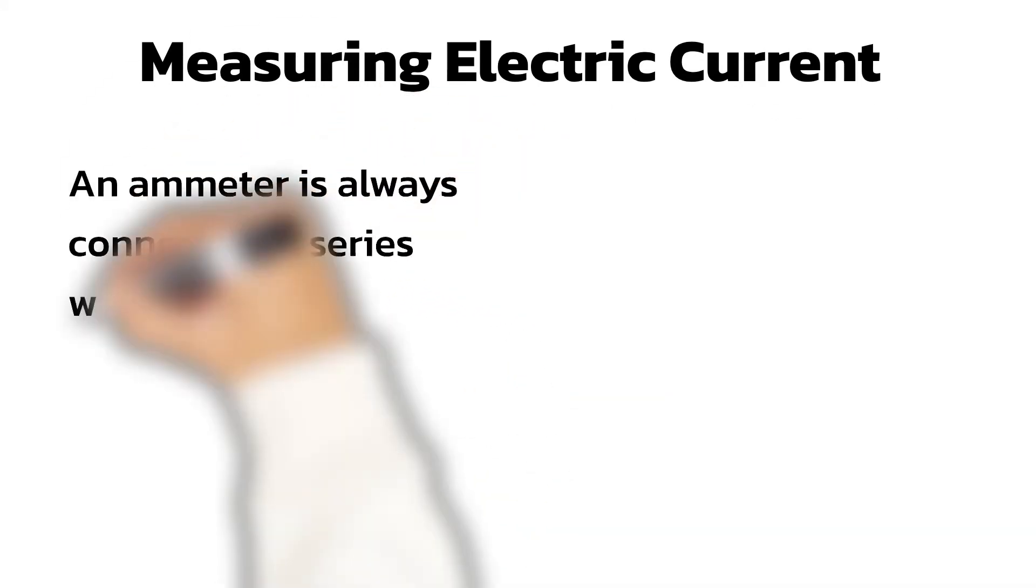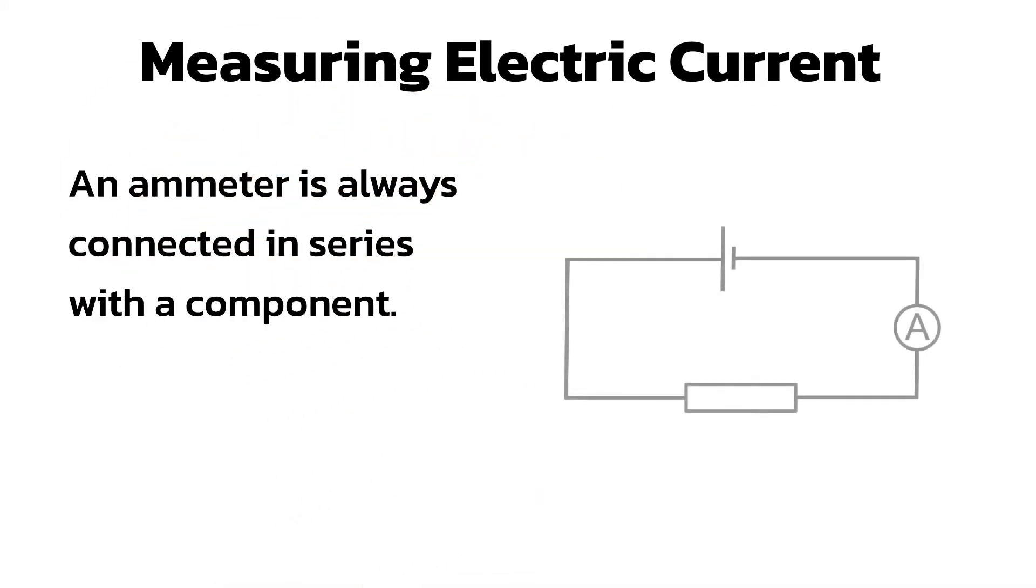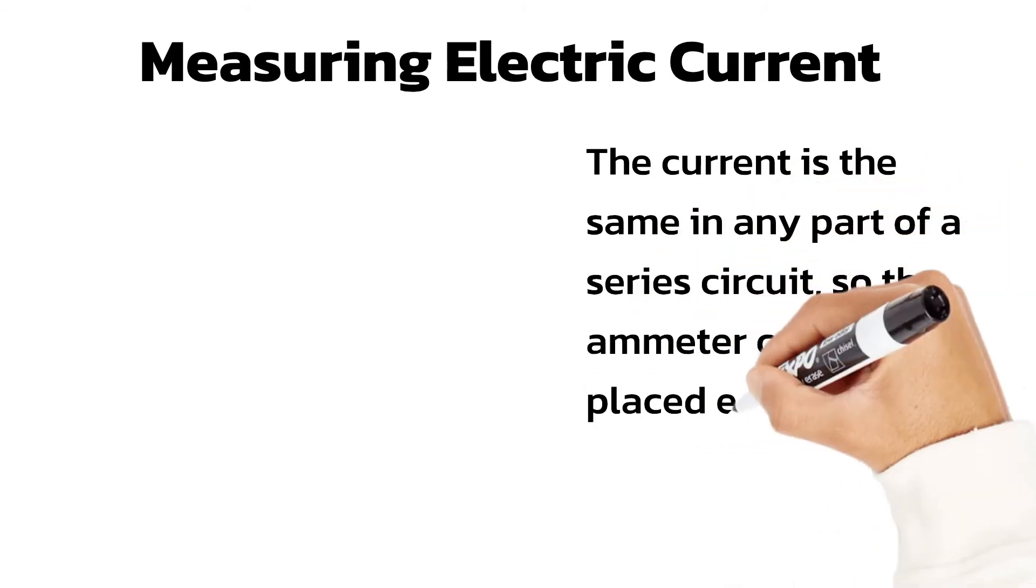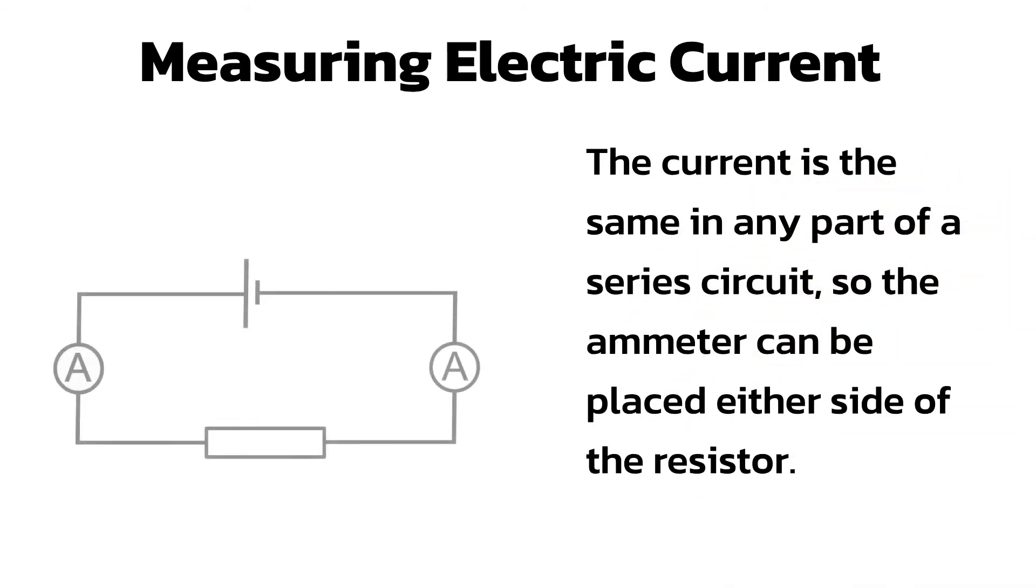Ammeters are always connected in the same loop as the component the current is flowing through. This is known as connecting in series. As the current is the same in any part of a series circuit, the ammeter could also be placed on the other side of the resistor.